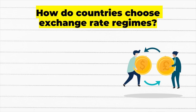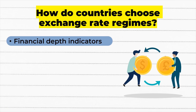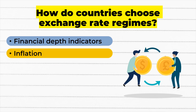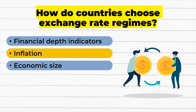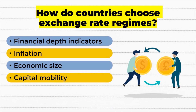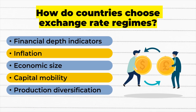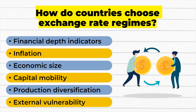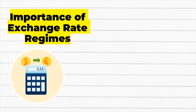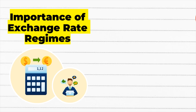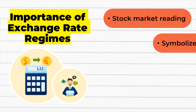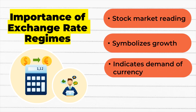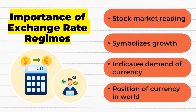Here are the factors to be considered: first is financial depth indicators, then inflation, economic size, and capital mobility — where increased financial integration promotes more flexible exchange rate regimes — next is production diversification, and last, external vulnerability. There are four areas of importance of exchange rate regimes: stock market readings, symbolizing growth, indicating demand of a currency, and the position of a currency in the world.